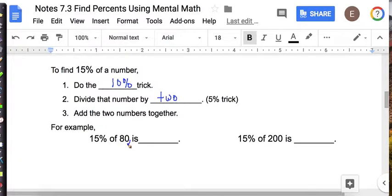I've got to take 10% of 80, which is 8. And now I want 5%, so half of 8 is 4. And 8 plus 4 is 12.